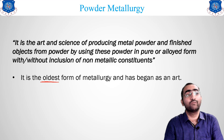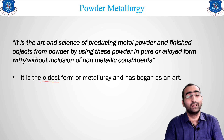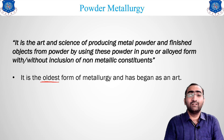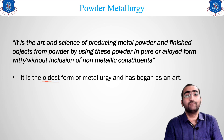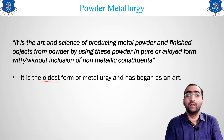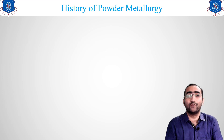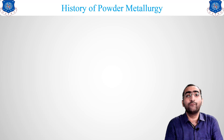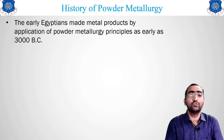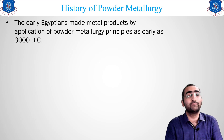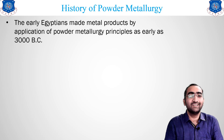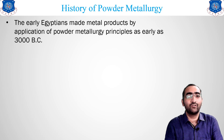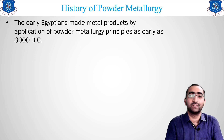Powder metallurgy is the oldest form of metallurgy and began as an art. Let us look at the history. Before 3000 BC, the Egyptians used to make metal products with the help of powder metallurgy, which is one of the basic evidences that it is one of the oldest forms of metallurgy.